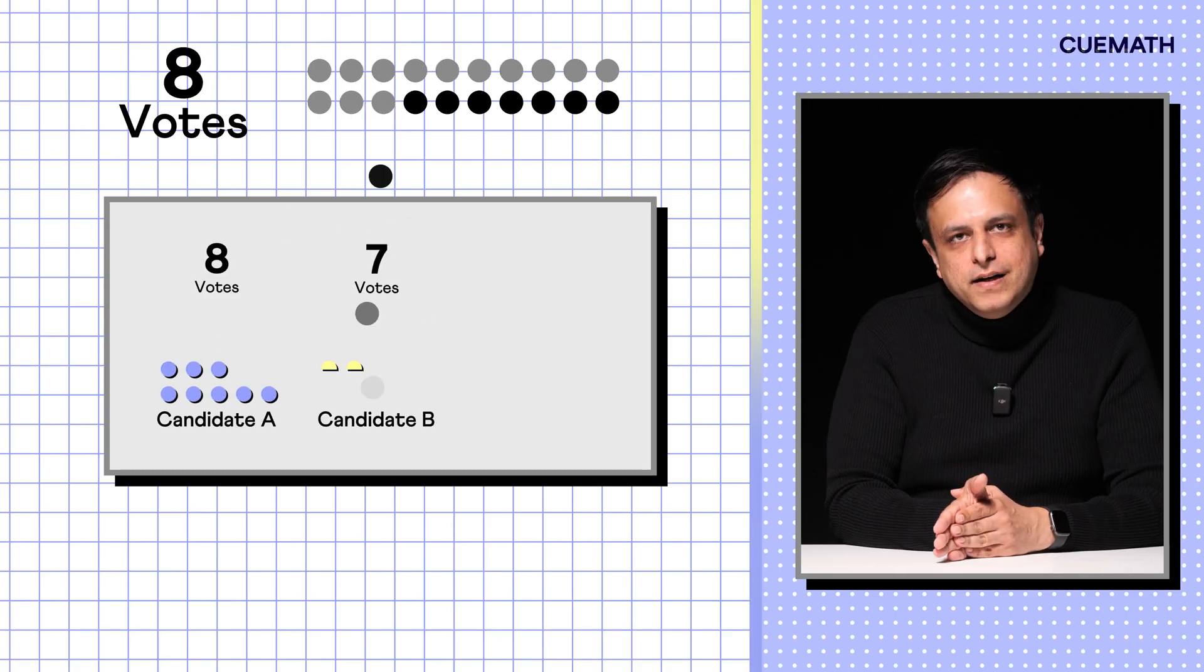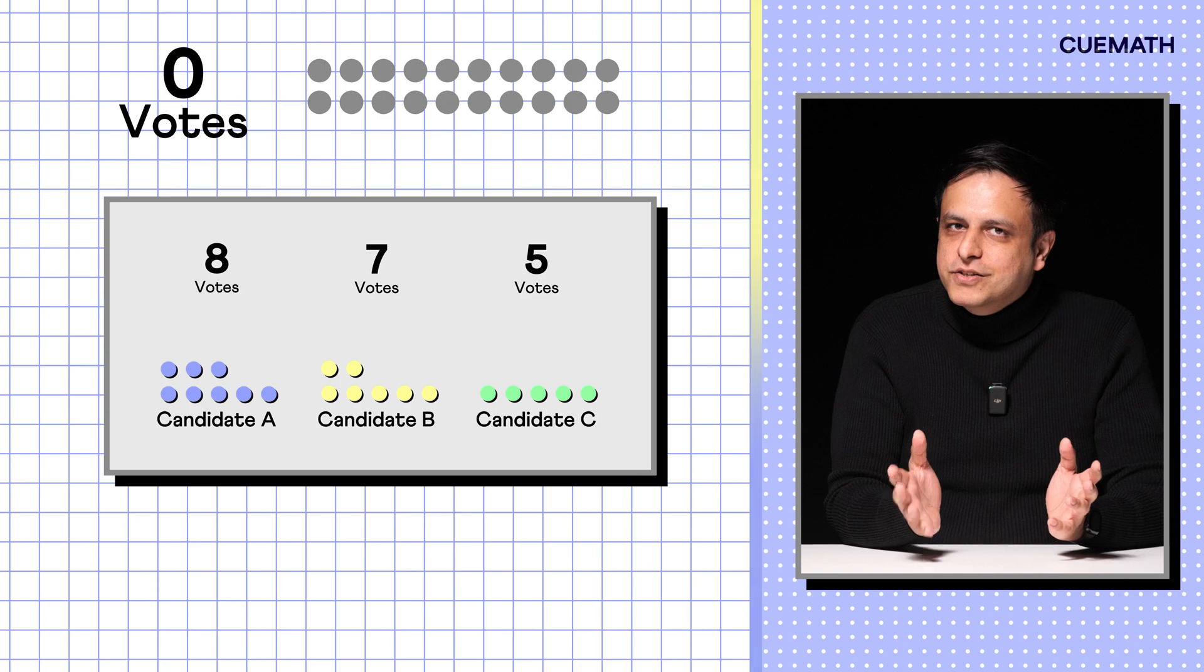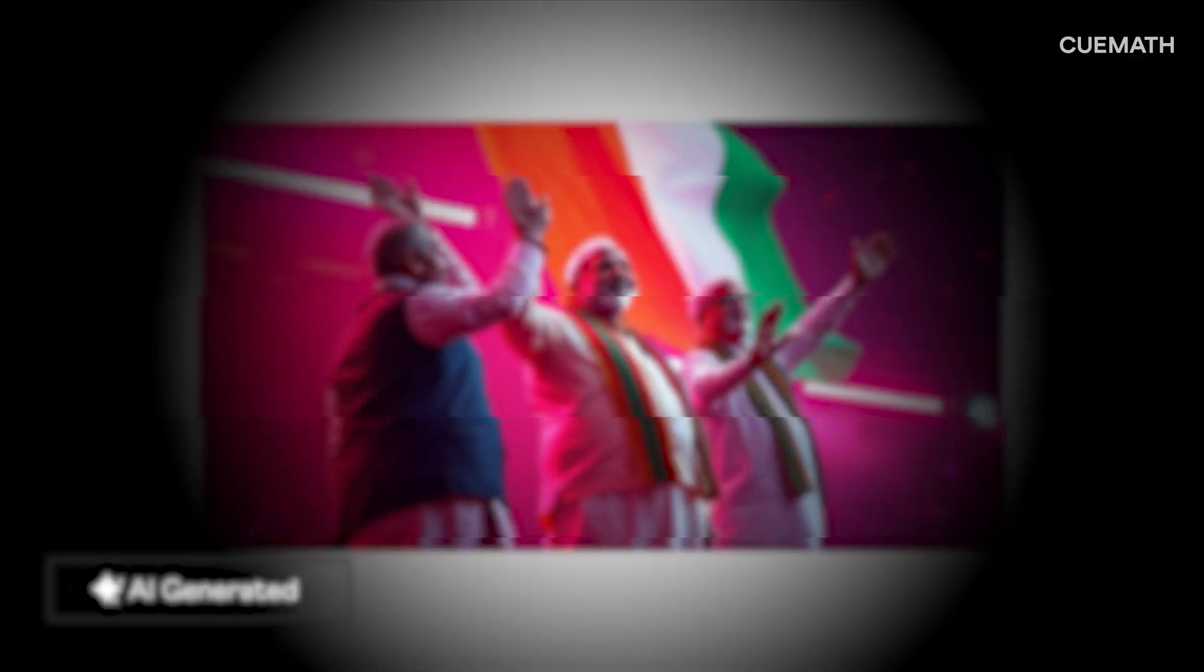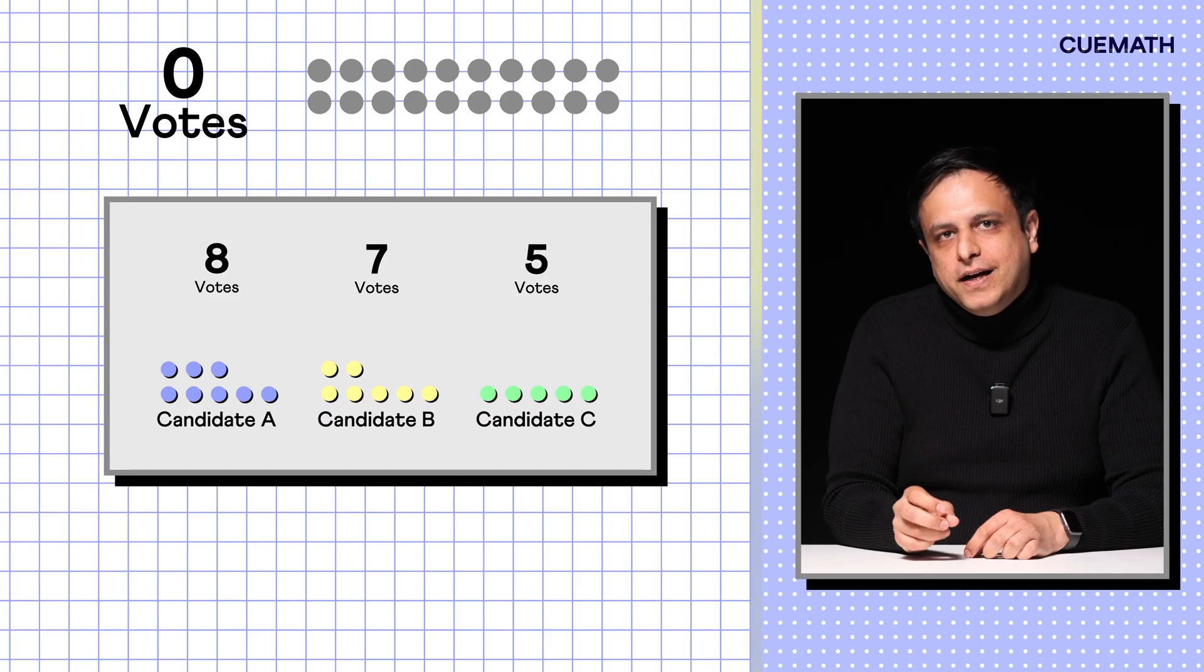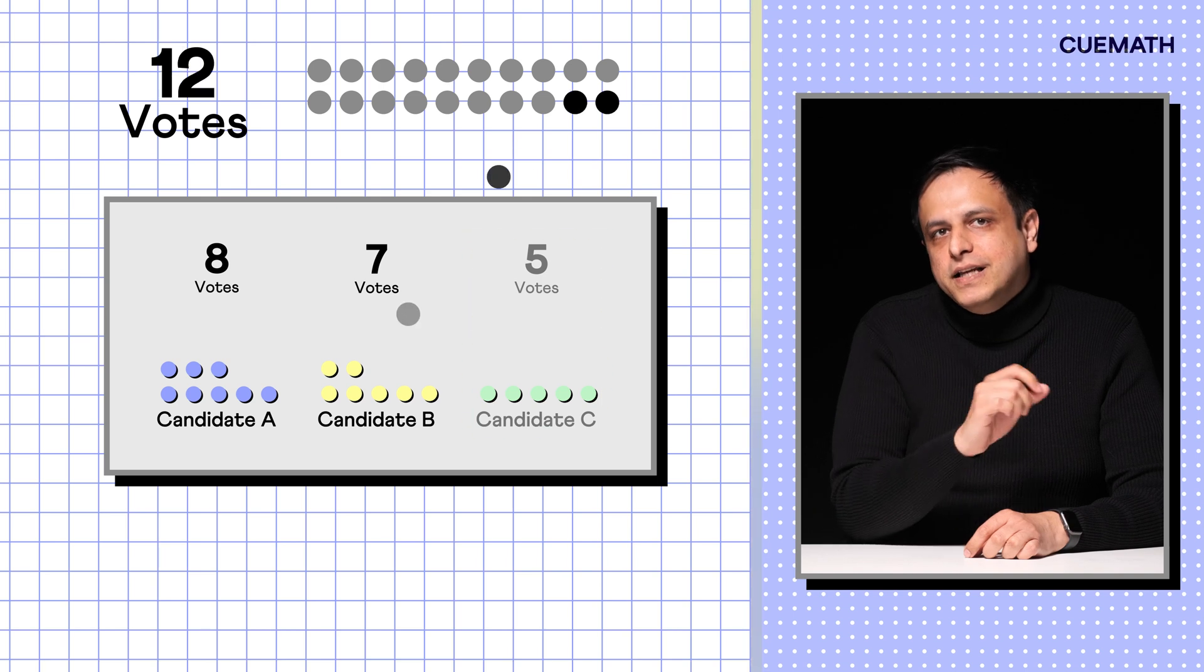But what if no one has a clear majority? For example, A has 8, B 7 and C 5. What's the solution? In such cases, coalitions can form as often seen in India, but this isn't a mathematical fix. So, one option is to hold a re-election. But with the same candidates and voters, the outcome may not change. But what if we eliminate the least preferred candidate C and then re-run the election?